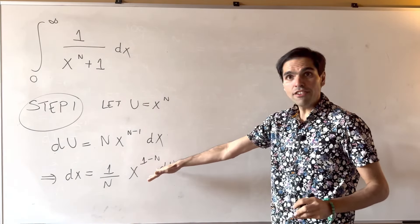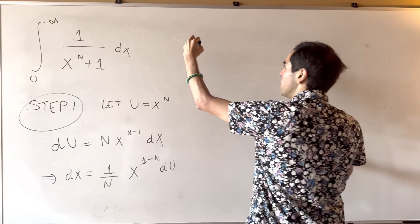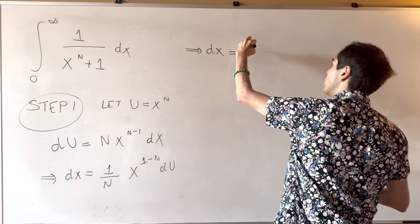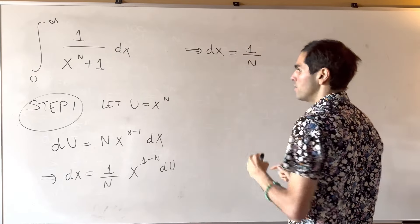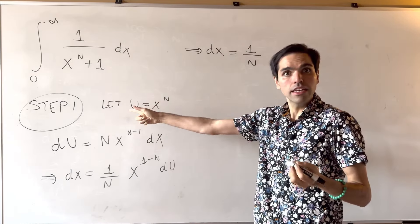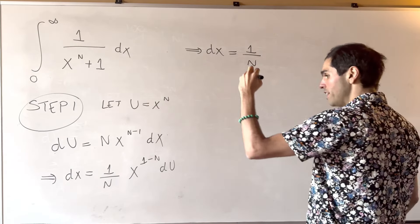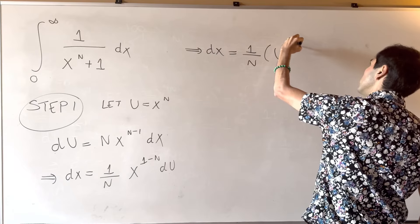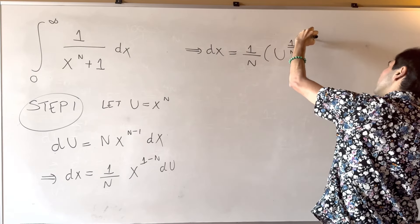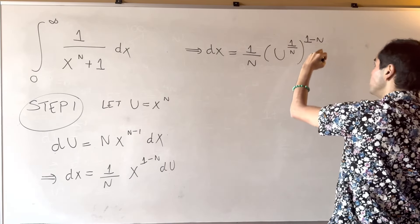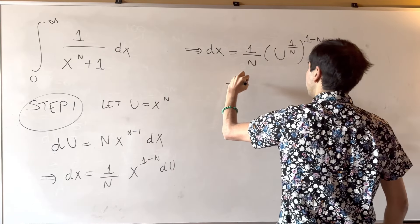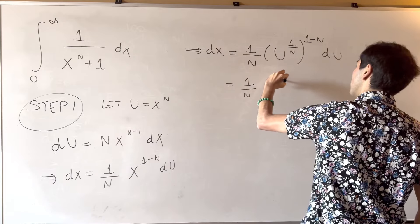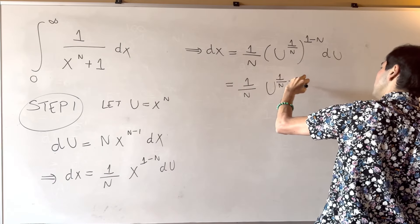However, we want to write everything in terms of u, so dx becomes 1 over n. Since u is x to the n, x is u to the 1 over n — because things are positive here — so we get u to the 1 over n to the power of 1 minus n du. In the end, we get 1 over n times u to the 1 over n minus 1 du.